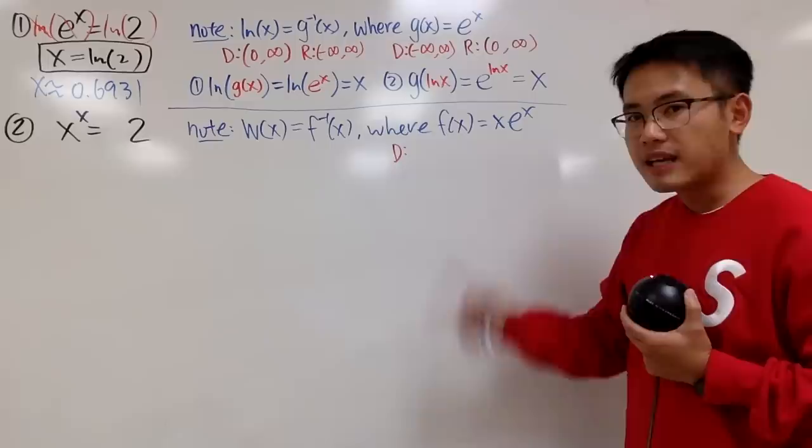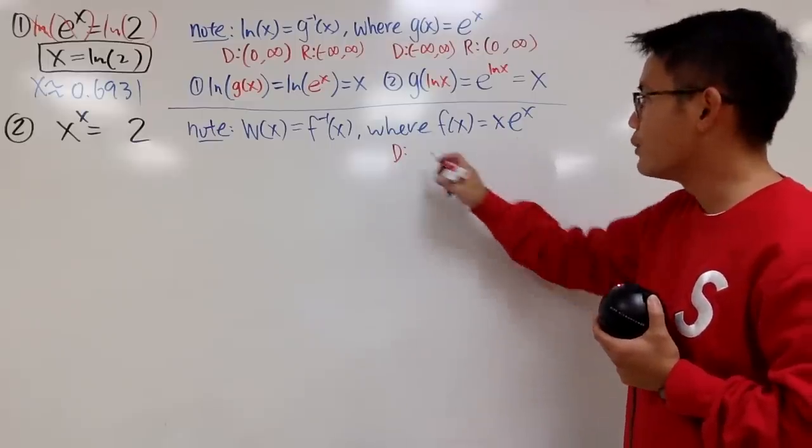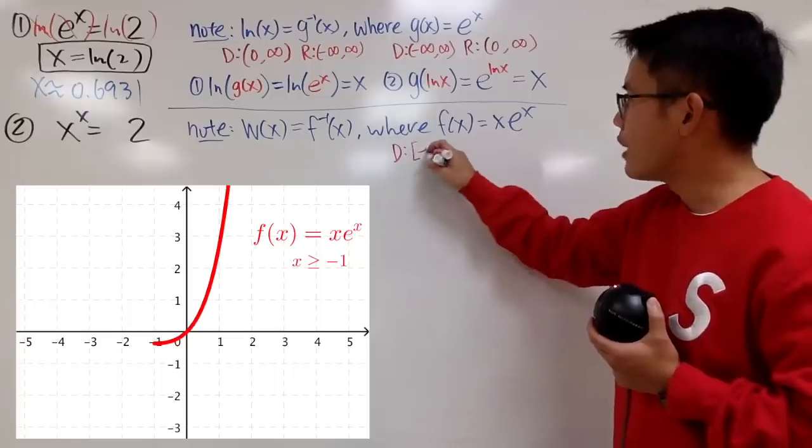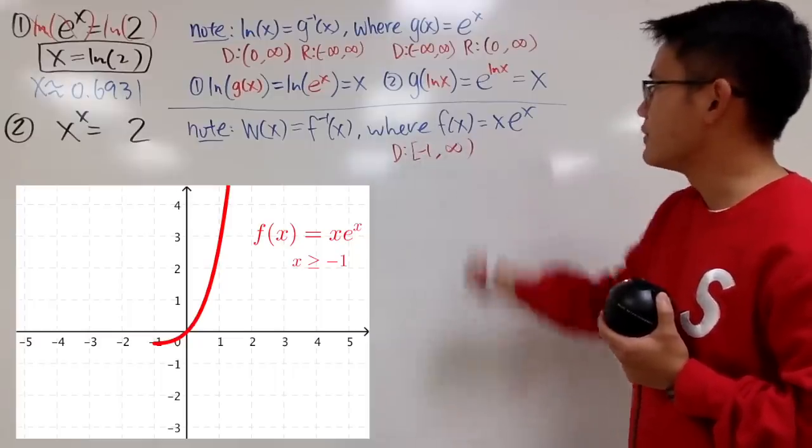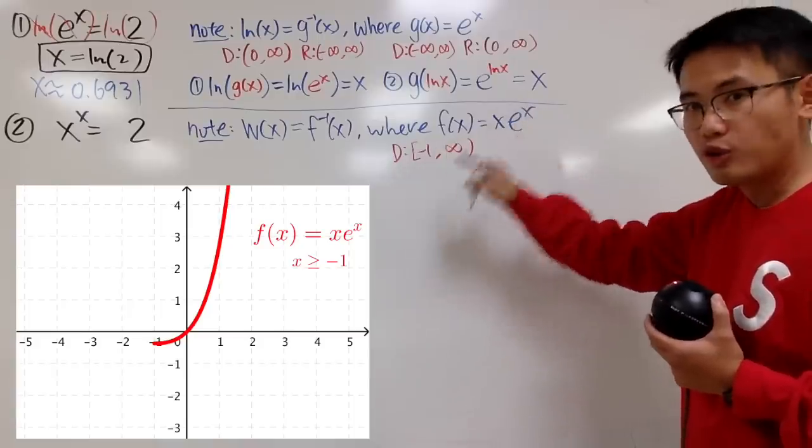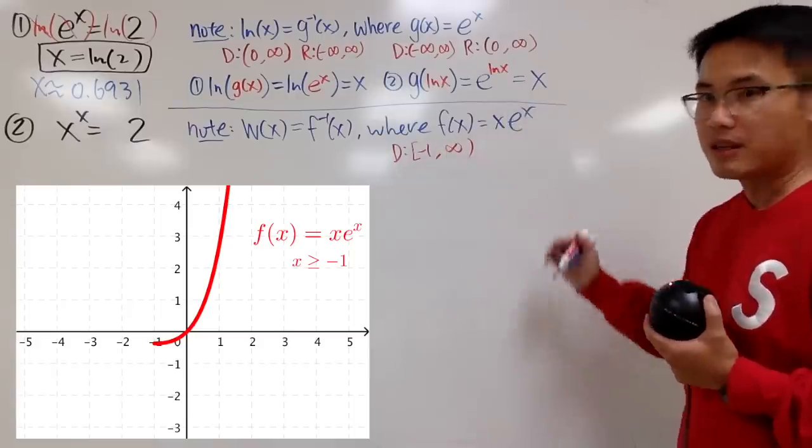Well, unfortunately, it does not pass the horizontal line test, so we have to cut it somewhere. And the cut is going to be the lowest value, and that happens to be when x is negative 1. So I will start at negative 1 and go to positive infinity. That will be the domain for this. The domain to have inverse, not the domain of this by itself.